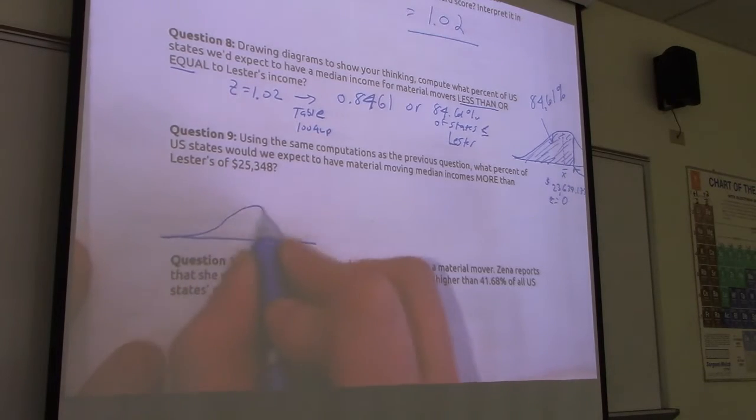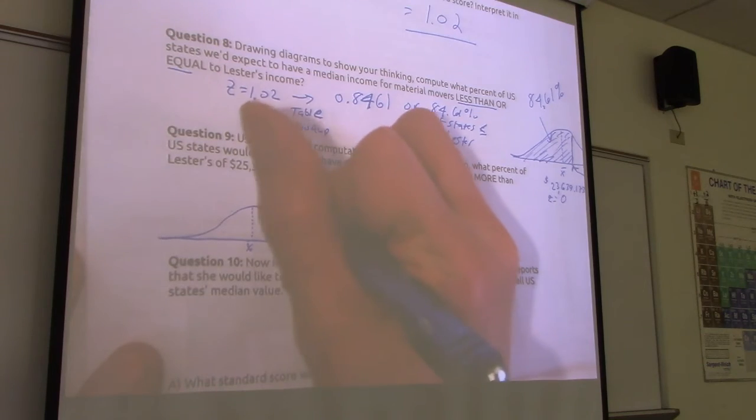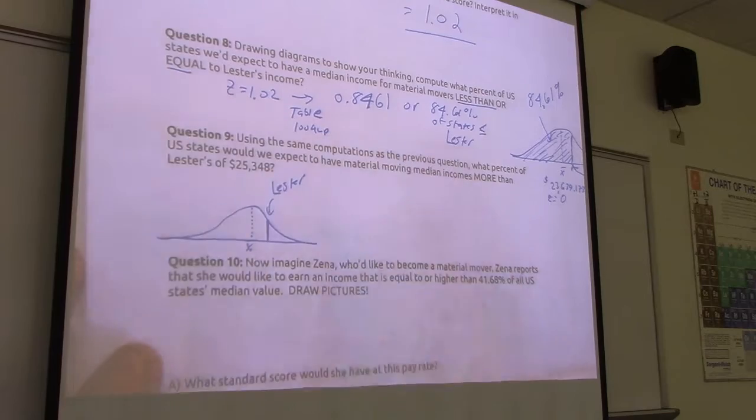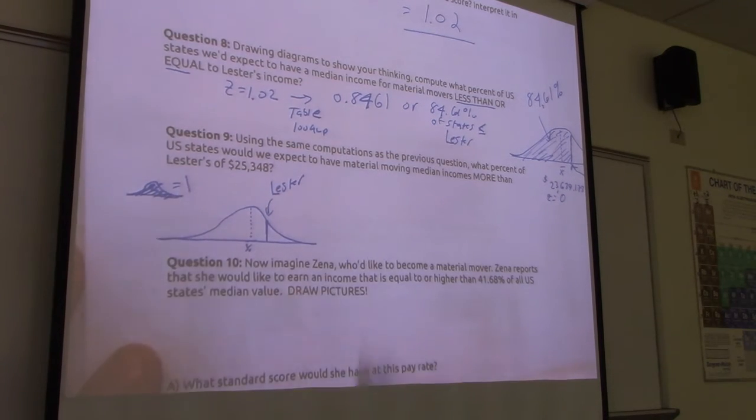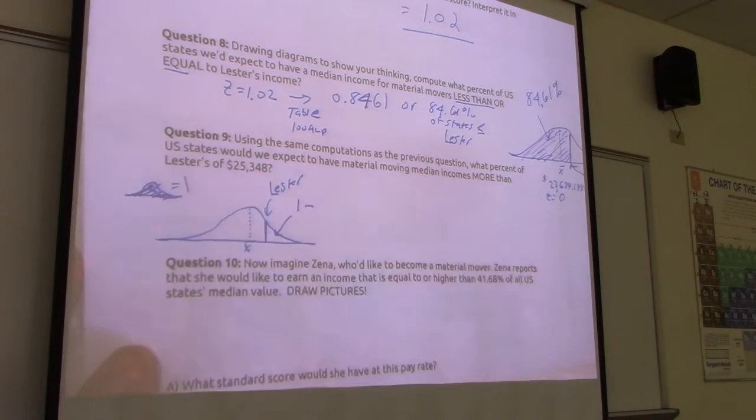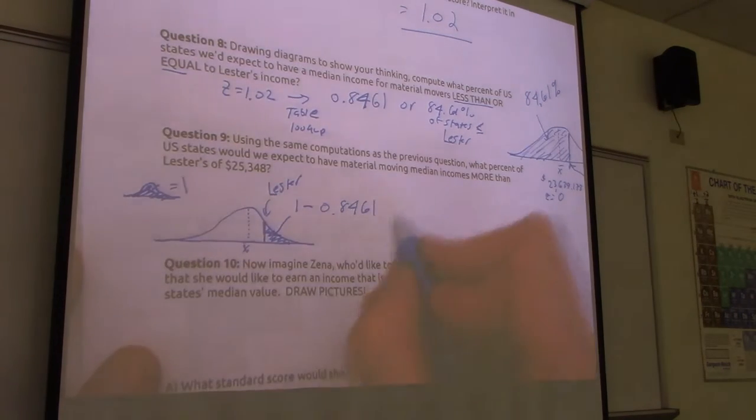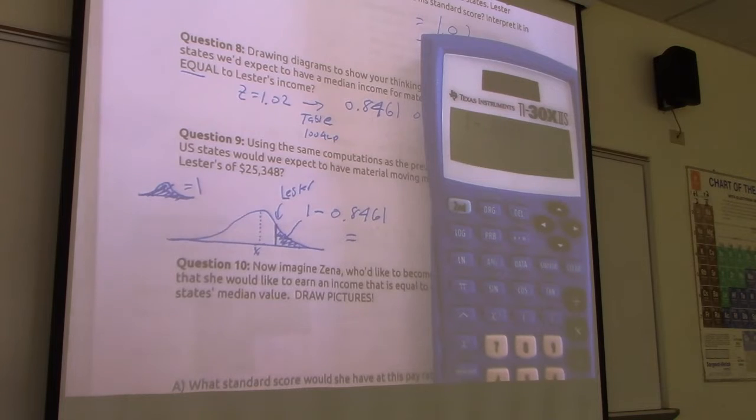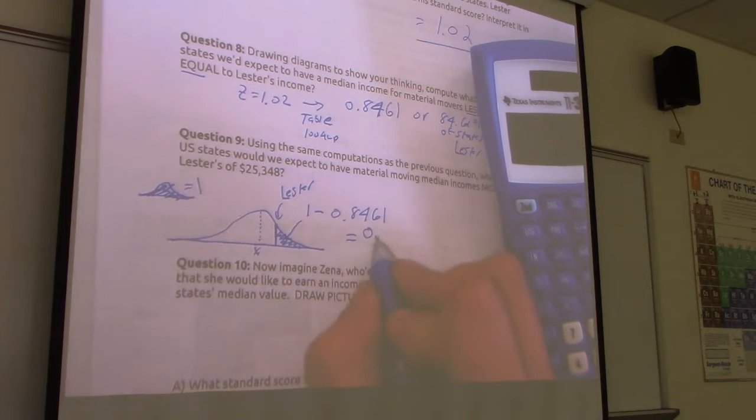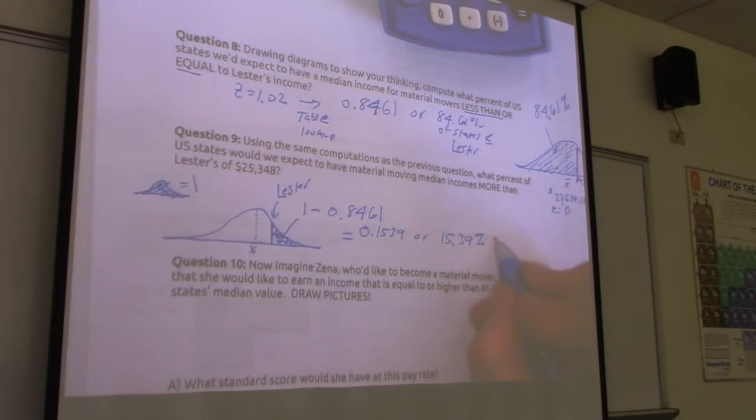Here's mean, X bar. Here's Lester. Lester gets a capital. We know that total under the curve equals 1. So this part equals 1 minus what? 0.8461. Yep, you got it. I didn't need to do another lookup. I just needed to flip my value to be a greater than. So I'm going to let my calculator help. Equals 0.1539 or 15.39% greater than Lester. Lester is 1.02.